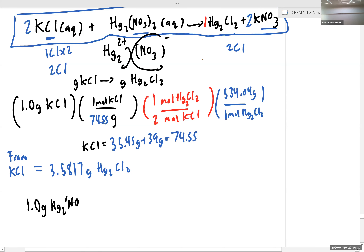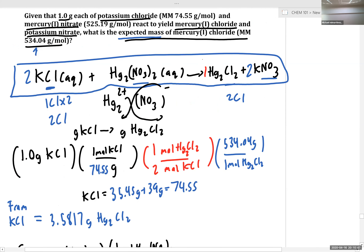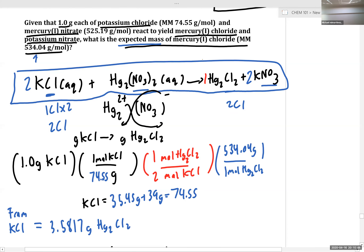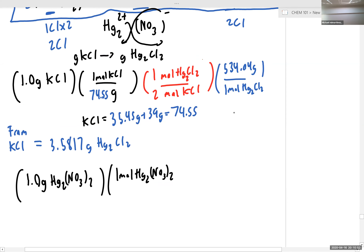We're going to need to do the same calculation from our starting material of mercury nitrate. So if we start off with one gram of mercury(I) nitrate, let's look up the molar mass. For mercury(I) nitrate, it has a molar mass of 525.19, so let's plug that in.